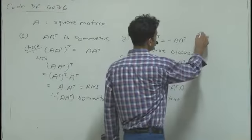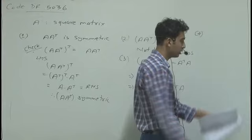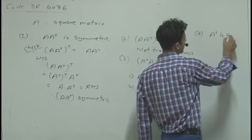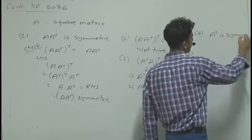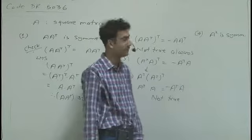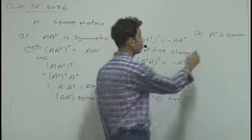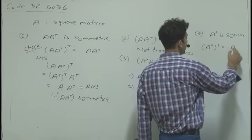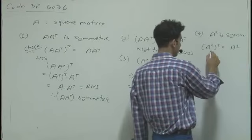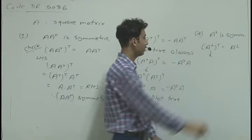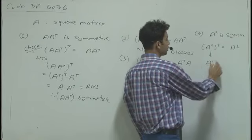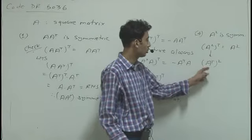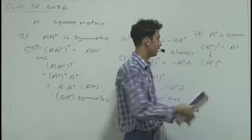For the fourth option, we have A square is symmetric. If A square is a symmetric matrix, then we need to show that A square transpose equals A square. Taking LHS, we can get A transpose whole square, but it is not always equal to A square. So the fourth option is also not always true.